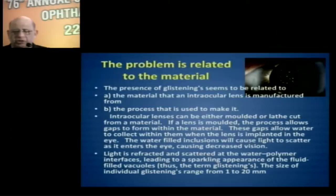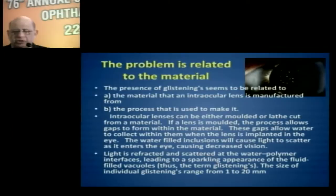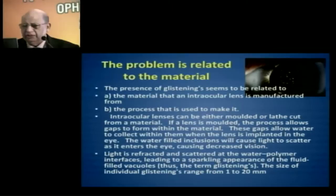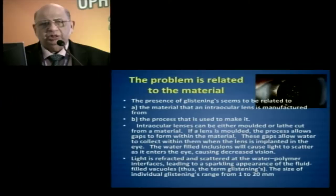The problem is essentially related to the material from which the lens is manufactured and the process by which it is made. Intraocular lenses can either be molded or lathe cut. If a lens is molded, the process allows gaps to form within the material. These gaps allow water to collect, and the water-filled inclusions cause light to scatter at the water-polymer interface, leading to a sparkling appearance — hence the term glistening.